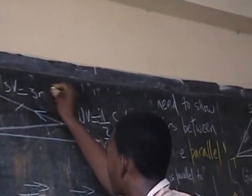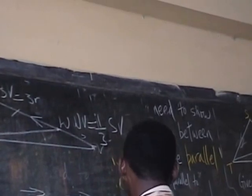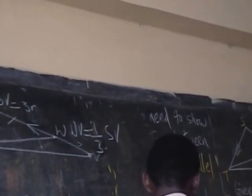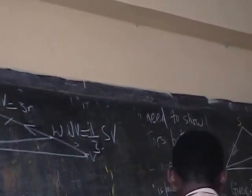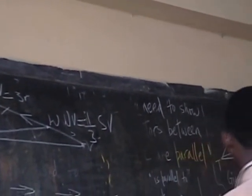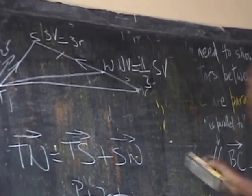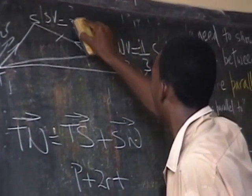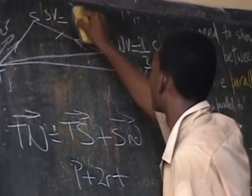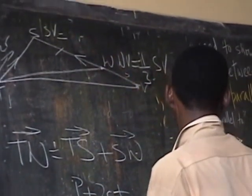The teacher works it out: 'So S, V is 3R and V, S is 3R?' He clarifies the sign: 'V, S is 3R. S, V would have been negative 3R.' He's frustrated: 'We've been saying that long time! If the pi is positive, be like negative.'